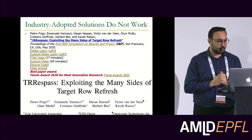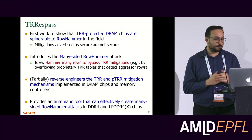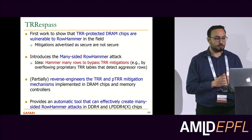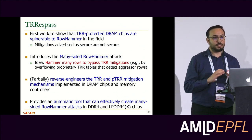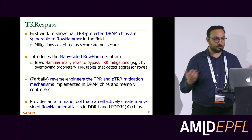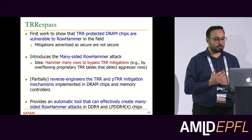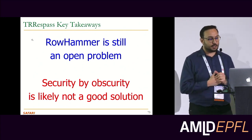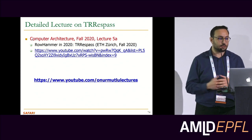This work, done in collaboration with Professor Azizi's group, is called TRRespass. It is the first work to show that TRR-protected DRAM chips are vulnerable to Rowhammer in the field, and the mitigations advertised as secure are not actually secure. It introduces many-sided Rowhammer attacks — you hammer many rows so that the on-DRAM TRR mechanism cannot track all of them, gets confused, and you can reach the hammer count needed to induce bit flips. This paper provides an automatic tool that creates many-sided Rowhammer attacks for DDR4 and LPDDR4 chips, showing Rowhammer remains an open problem and security by obscurity is not a good solution.